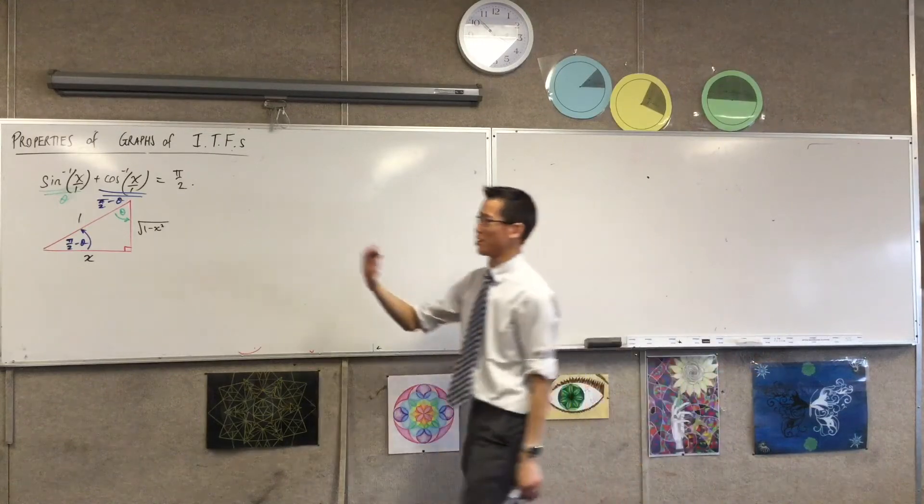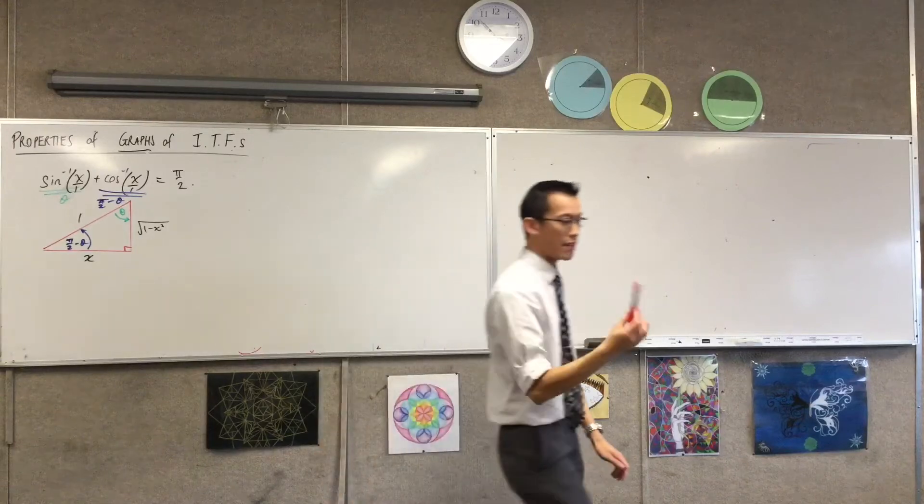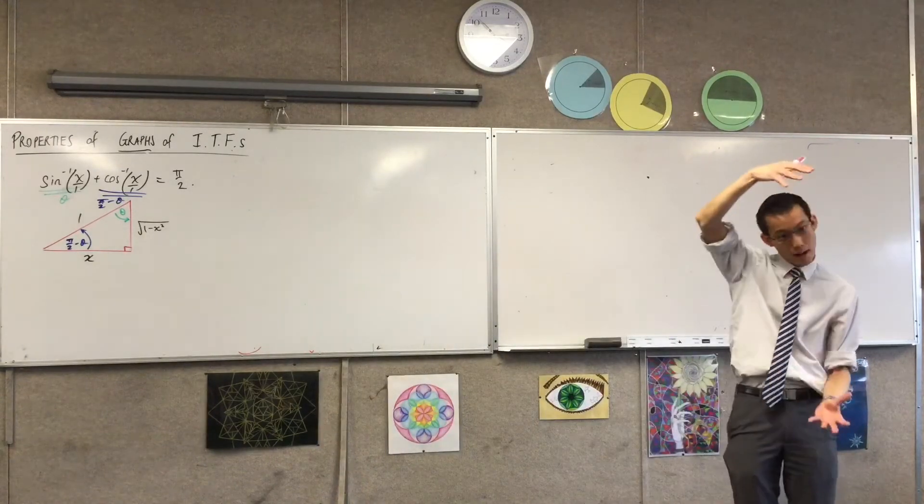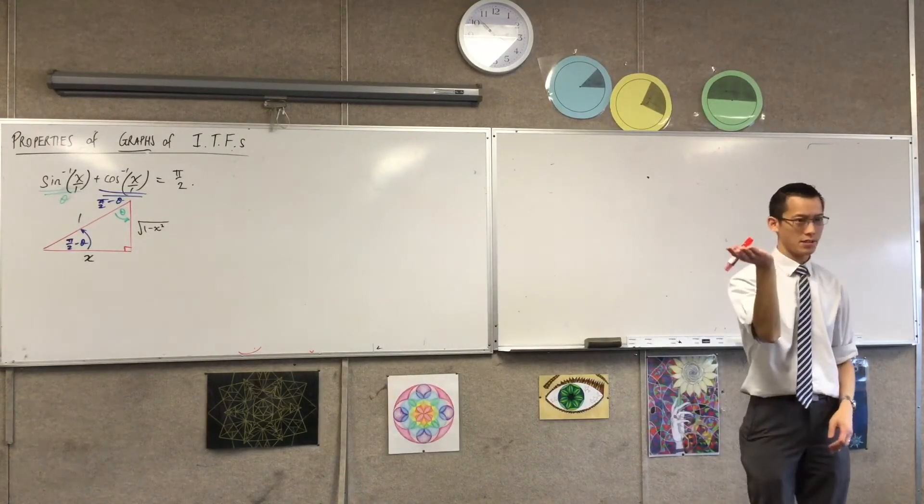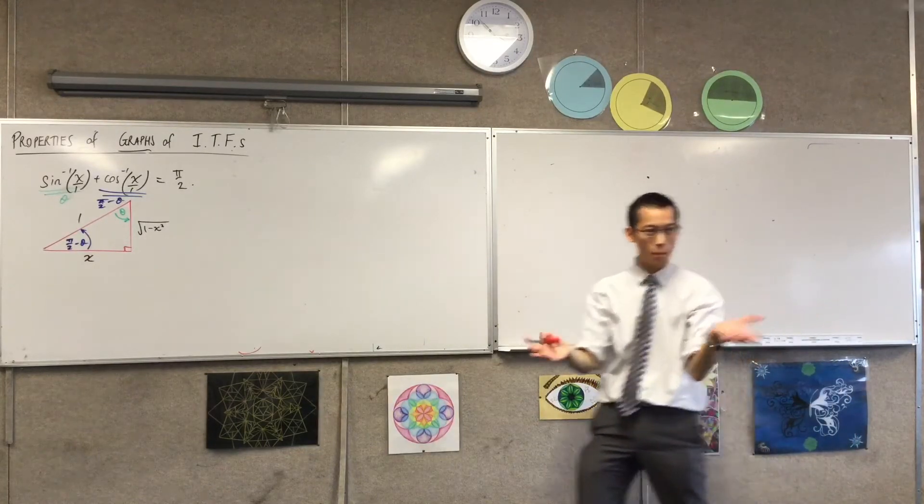So instead of appealing to a triangle, I'm going to appeal to a graph, kind of two. So would you draw a set of axes for me, but make it big enough that we can fit not just sine inverse, but sine inverse and cosine inverse together. Can you do that for me? One graph.